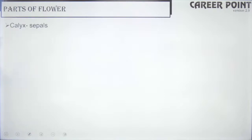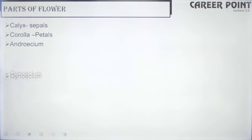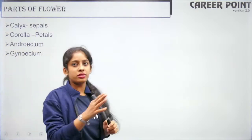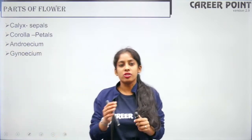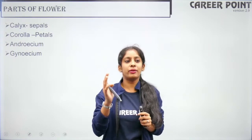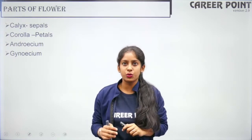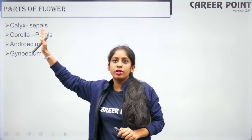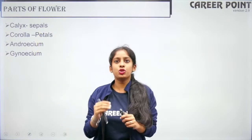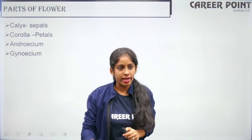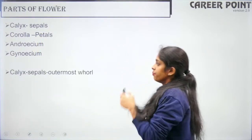So the three types based on ovary position are hypogynous, perigynous and epigynous. Now we are going to talk about each of the four parts of the flower in detail — calyx, corolla, androecium and gynoecium.